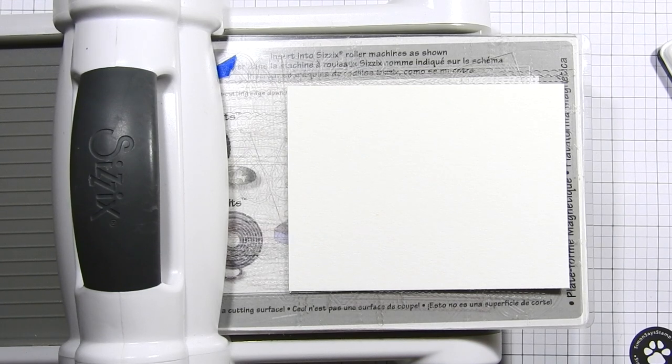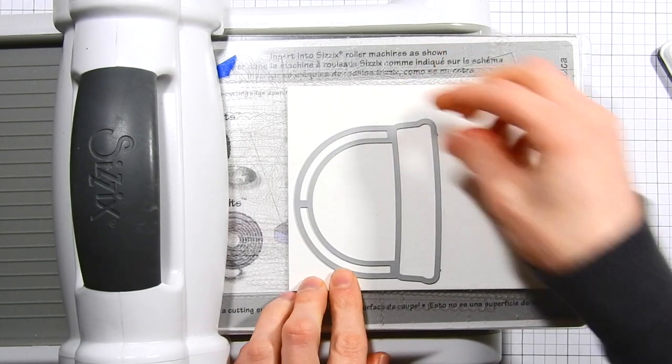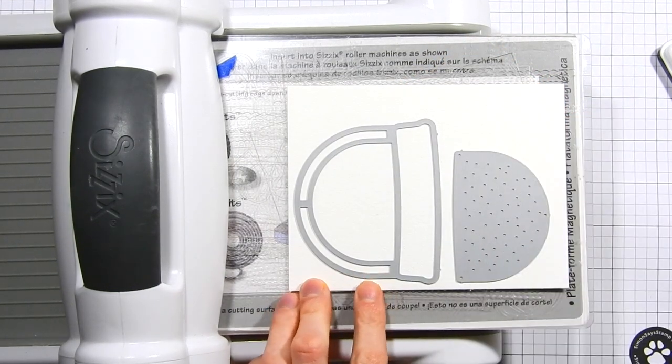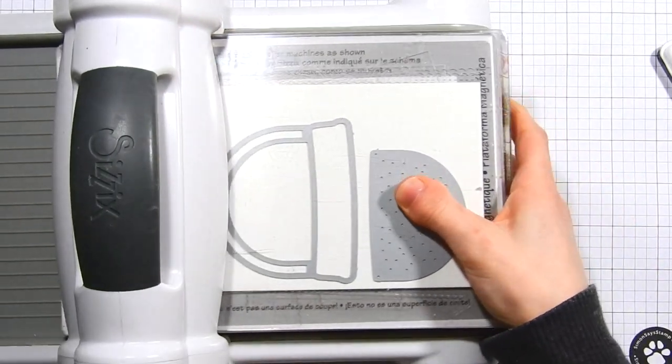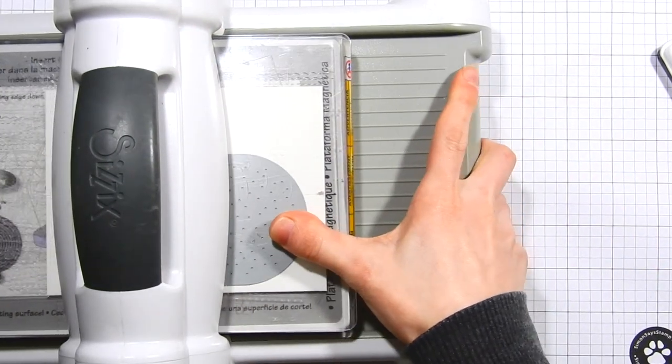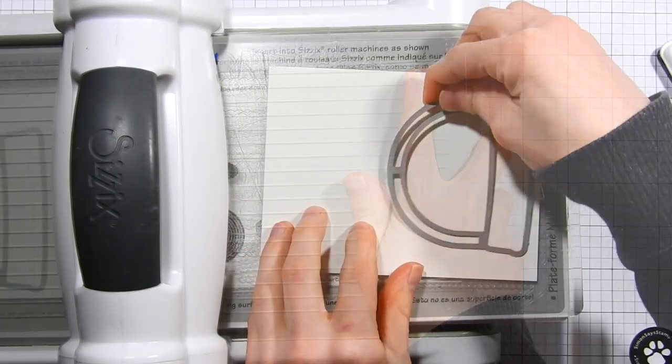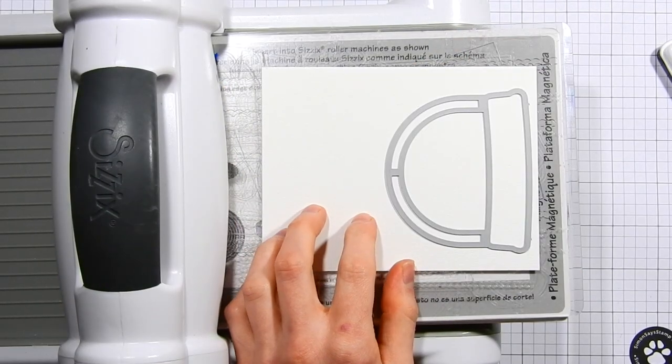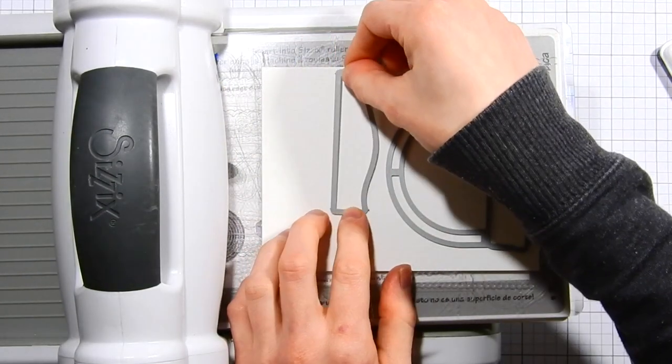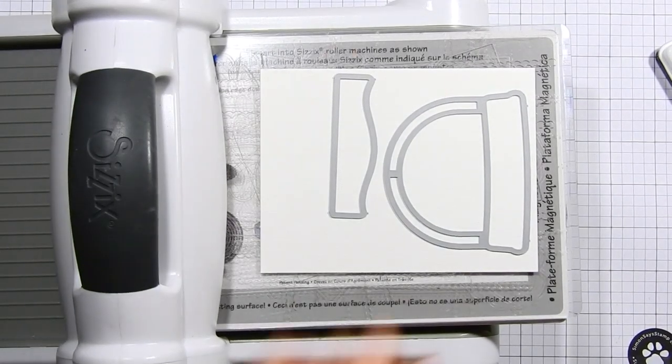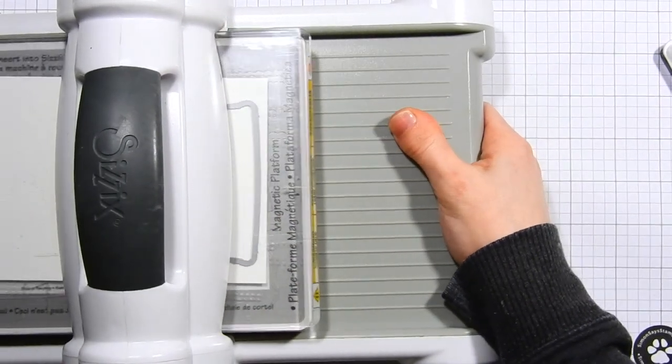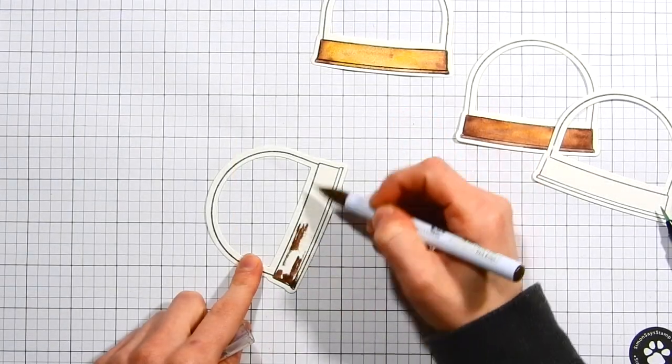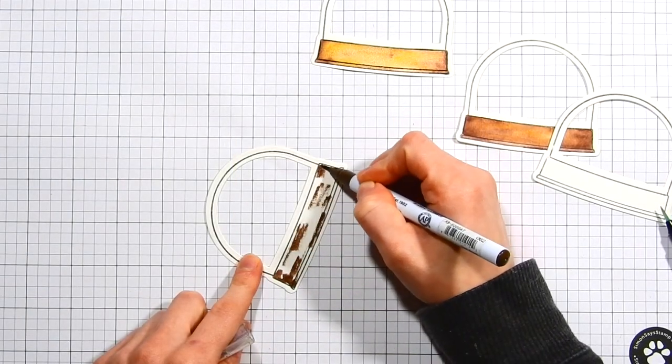I'm going to take that die set and I'm going to start die cutting it from some watercolor paper. This watercolor paper is Canson XL paper. It's the same paper that I used to color in my little images. I'm die cutting the outline that also die cuts the middle portion and I also use the snowy background as well. However, you'll notice I'm also die cutting the little snowy hill. I decided not to use that on the finished project but I did end up die cutting it and it is an option in case you do want to go ahead and do that.